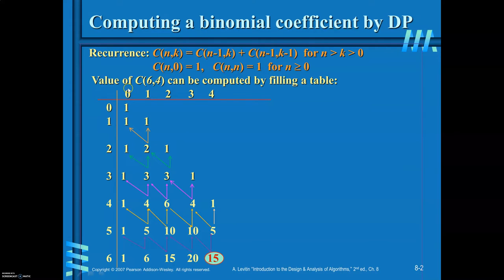Now filling the table: C(0,0) = 1, C(1,0) = 1, C(1,1) = 1, C(2,0) = 1. For C(2,1), look at the previous row in the same column (value is 1) and the previous row, previous column (value is 1); their sum gives 2. And C(2,2) = 1.